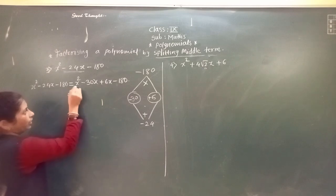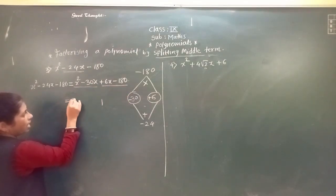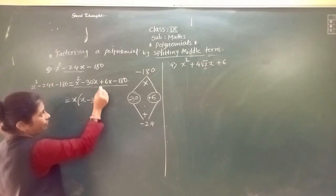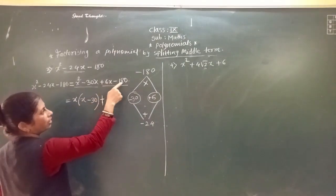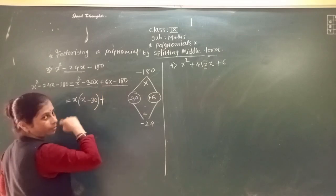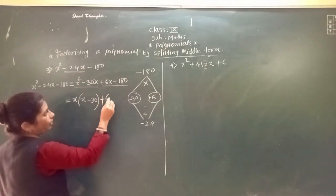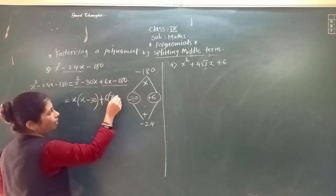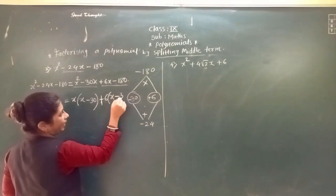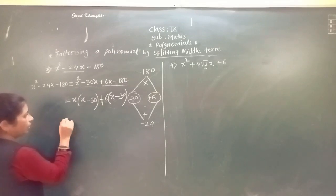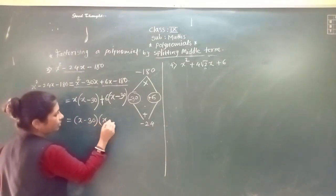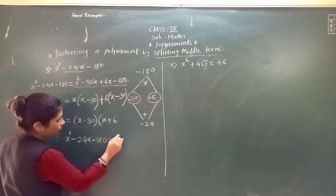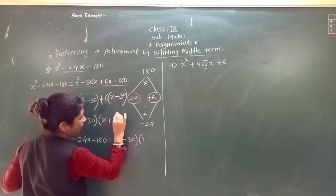So here: x² minus 24x minus 180. Instead of minus 24x we write minus 30x plus 6x minus 180. Make two groups of 2 each. x is common in the first 2 terms, so x times x minus 30. The sign is plus. For the second group, 6 and 180 are multiples of 6, so take 6 as common; inside: x, and 6 times minus 30 gives minus 180. So the factors are x minus 30 and x plus 6. So x² minus 24x minus 180 equals to x minus 30 times x plus 6.